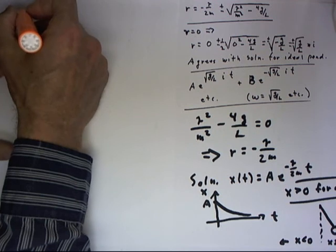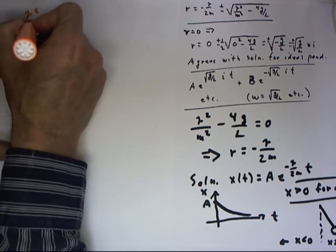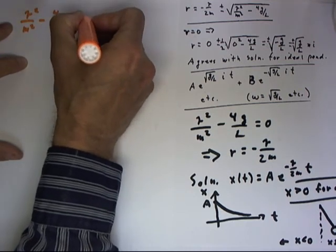Now, let's consider the case where this discriminant, gamma squared over m squared minus 4g over L, is greater than zero.